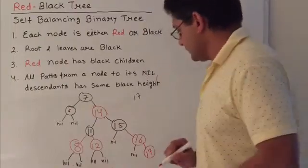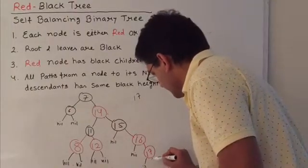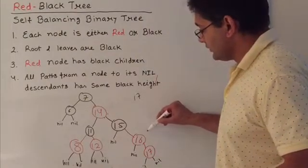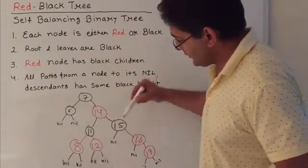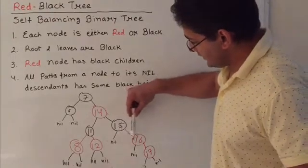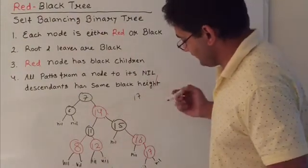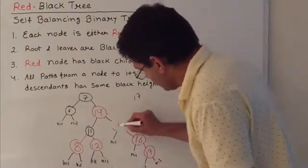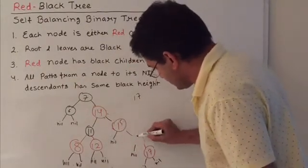Whenever we add a new element, we mark it as red, and it will have its null black leaves. Now it violates the condition that two consecutive elements can't be red. So we look at its sibling. If the sibling is of a different color, then we switch the color with the parent. If the siblings are of the same color, then we change the color of these two nodes. In this case, the sibling is different, so we switch the color with its parent.